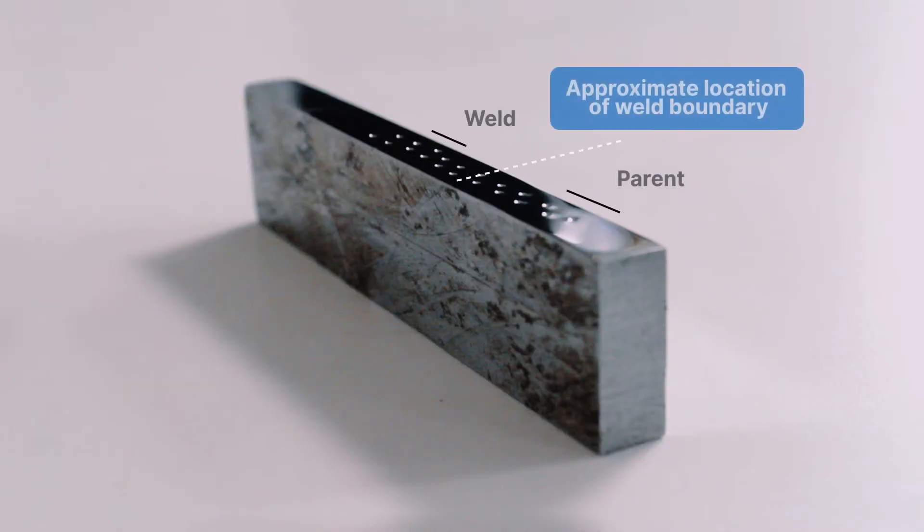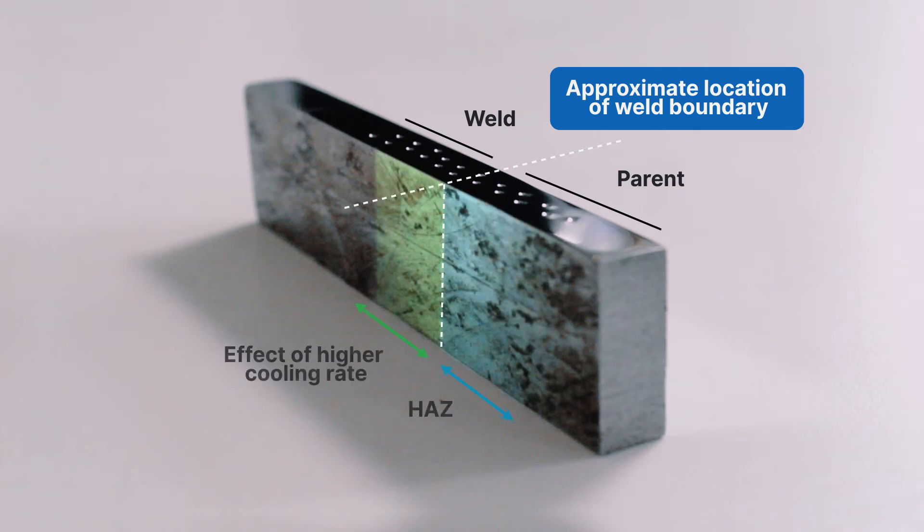PIP is well suited to obtaining full stress strain properties at a resolution that cannot be achieved using conventional uniaxial testing. On this sample here, which is actually one that we used in a recent publication, we've been able to map the changing properties from the weld through the heat affected zone and into the parent metal.